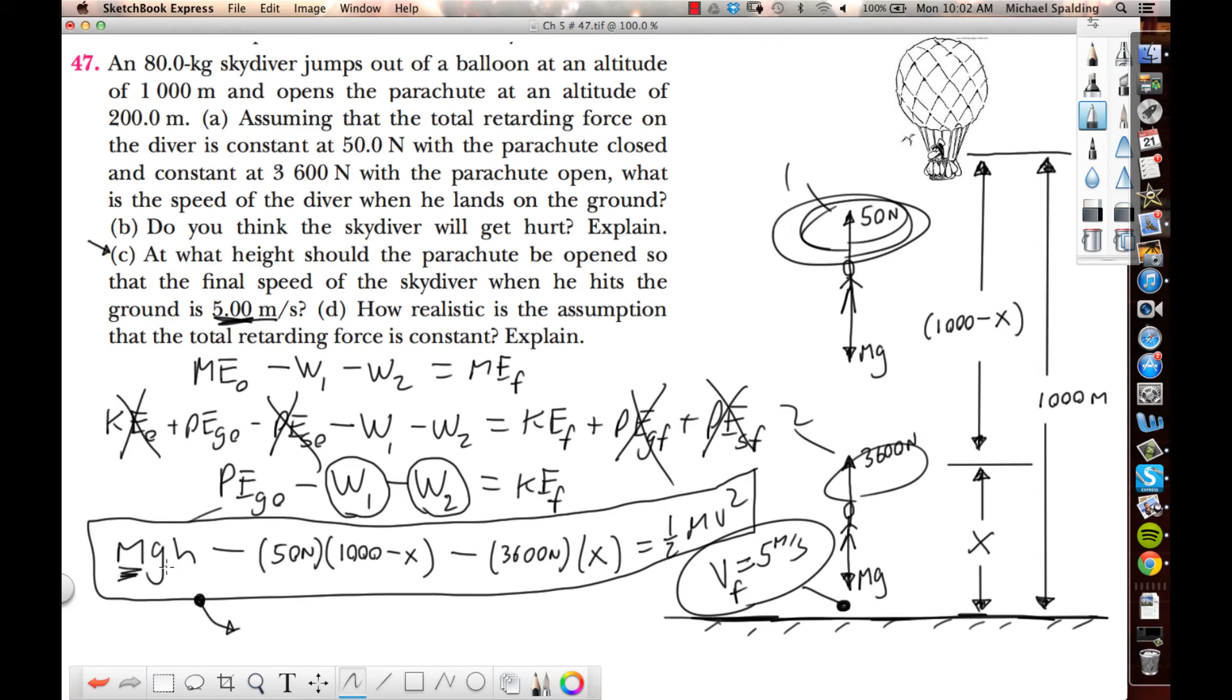M is 80, g is 9.8, h is a thousand, m is 80. You can solve this for x. You're going to have to distribute right there. But x comes out to be about 206 meters.